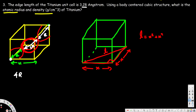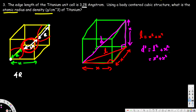Now we want to find the space diagonal from one corner of the cube to the opposite corner. We form another triangle using the face diagonal l and an edge x. This is also a 90-degree angle, so d² = l² + x². Since l² = x² + x², we get d² = x² + x² + x² = 3x². Therefore d = √3 · x.